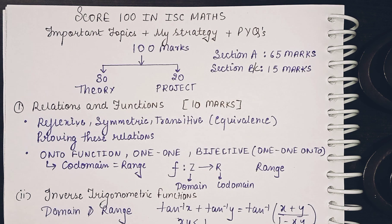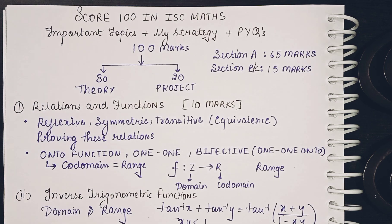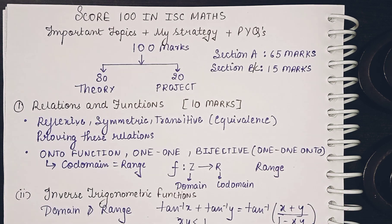A question can be framed to prove these relations — for example, prove it is a symmetric relation. Next is onto function and one-one function. When they are combined together, it is called a bijective function. One-one means injective, onto means surjective, and together it is called bijective. In onto functions, you have to prove that the co-domain equals the range.